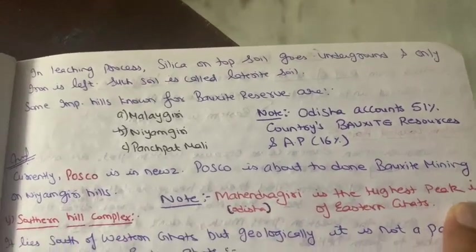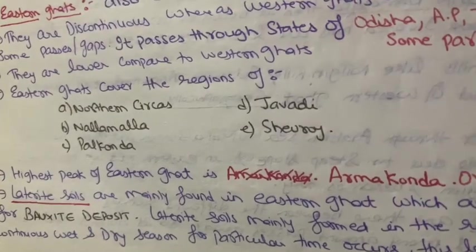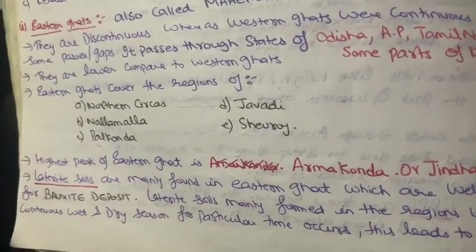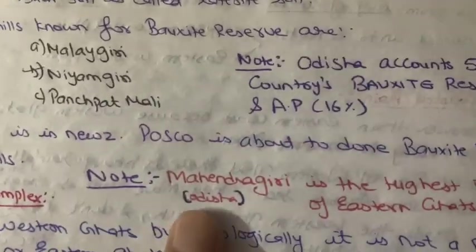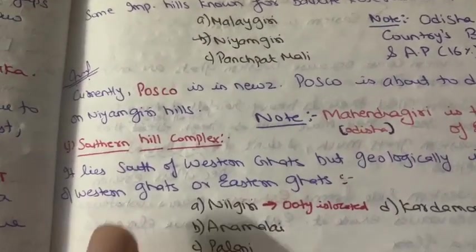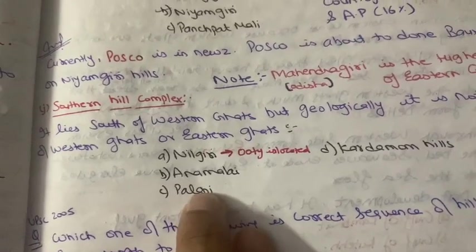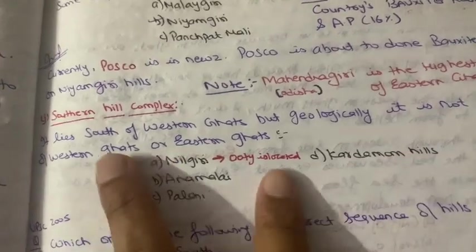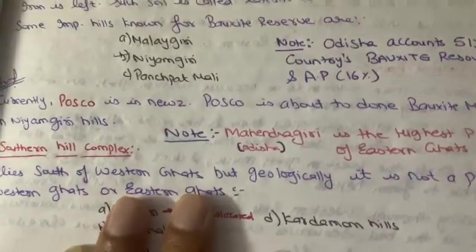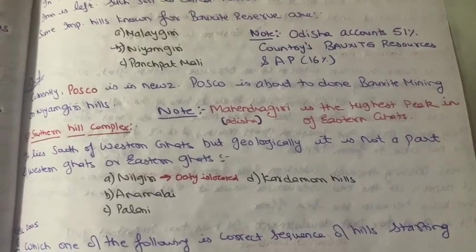Previously, Mahendragiri was considered the highest peak of Eastern Ghats, and you should know that Mahendragiri is located in Odisha. But now, if asked in UPSC or school exams for the highest peak of Eastern Ghats, the answer is Armakonda (also called Jindhagada), which is in Andhra Pradesh. Mahendragiri, the previous claimant, is in Odisha. This is a very important point to remember.